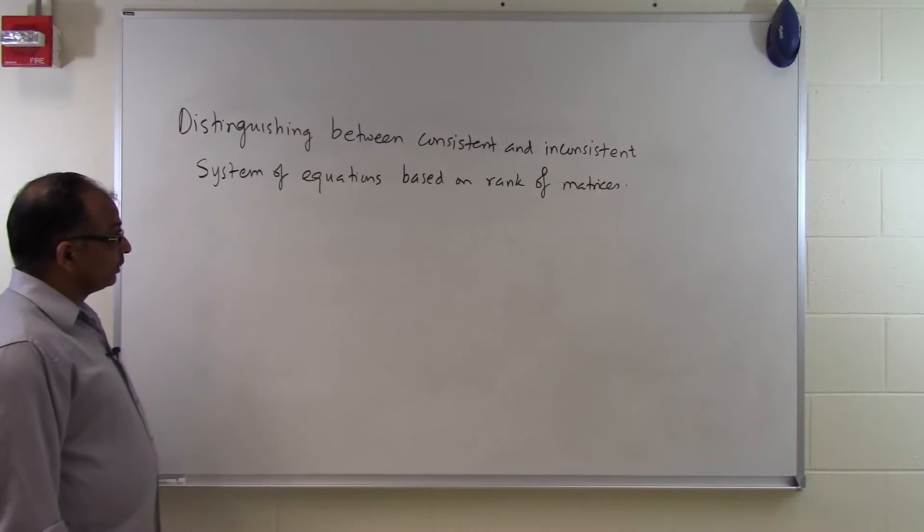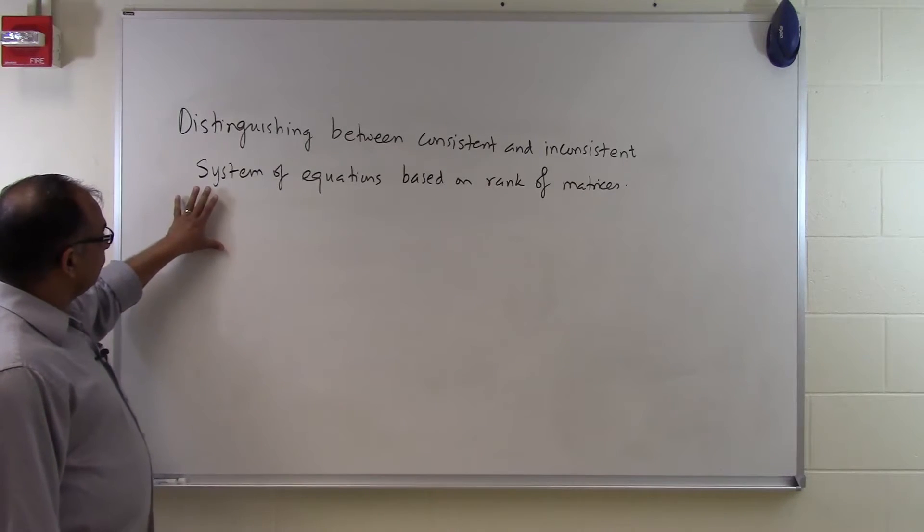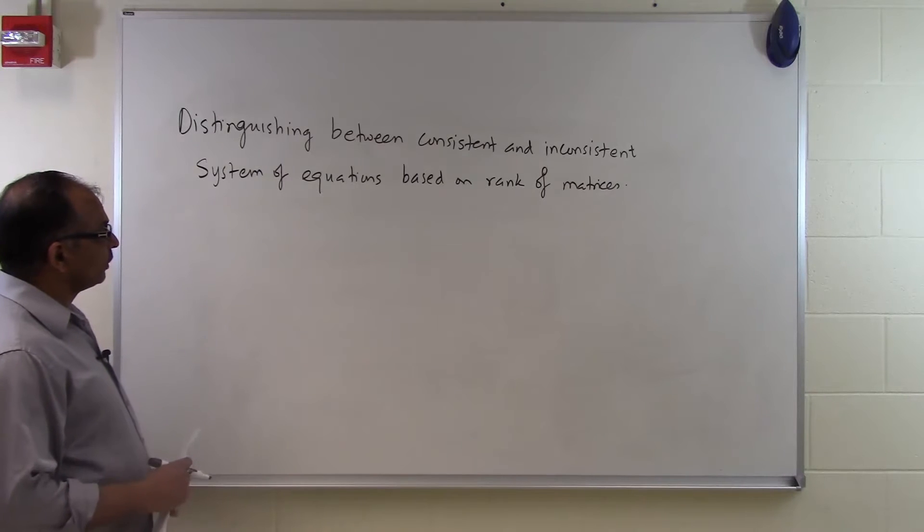I'm going to base it now on the definition of the rank of matrices. So we're no longer trying to do this by visual inspection, which won't be possible if we have many equations and many unknowns. We want to be able to come up with a scientific method of figuring out whether a particular system of equations is consistent or inconsistent.